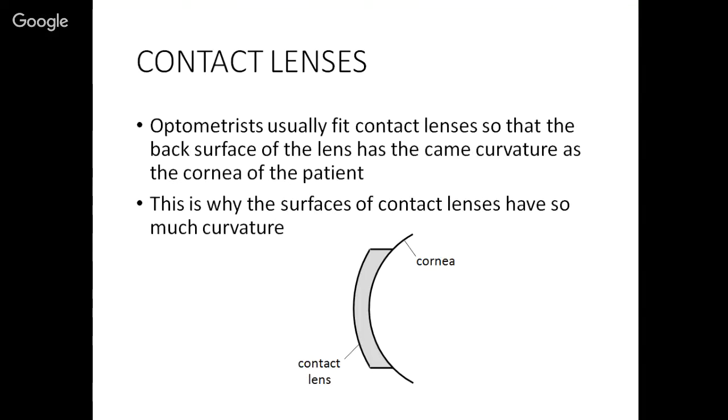So why does a contact lens have to have a high amount of curvature? It's because usually what optometrists do is that they put a contact lens on so that the back surface of the lens is about the same shape as the surface of the cornea. That way the contact lens can rest comfortably on the surface of the eye. So that's why contact lenses have to be so much more curved compared to spectacle lenses.